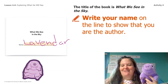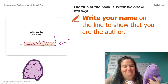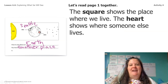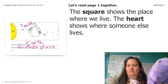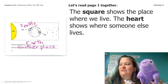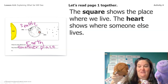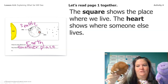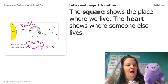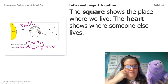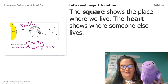I'm going to share what Lavender did in her mini book. The first thing she did is wrote her name, Lavender. Let's read page one together. The square shows the place where we live, and the heart shows where someone else lives. Lavender was thinking about her friend Tempest, who lives on the other side of the earth from her. So the heart is where someone else lives, and the square is where you live. Lavender wrote: I live in one place on earth, you live in another place. And she colored hers in and wrote the word Seattle to show that's where Lavender is.